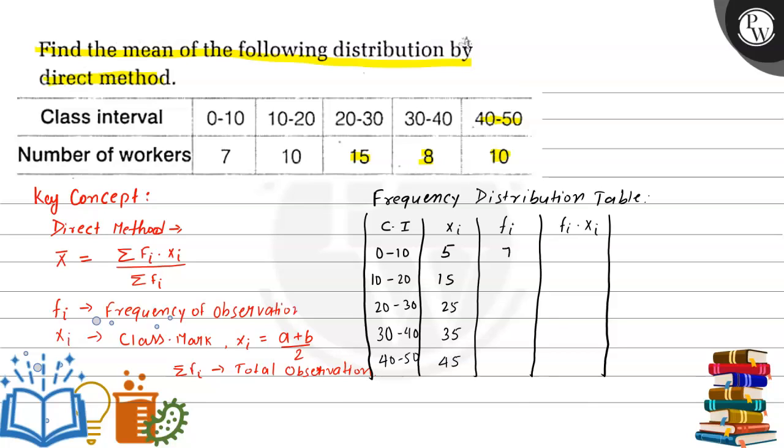Now the given frequency is 7, 10, 15, 8, and 10. Now if we multiply fi and xi for each class interval, we will get: 5 times 7 is 35, 15 times 10 is 150, 25 times 15 is 375, 35 times 8 is 280.